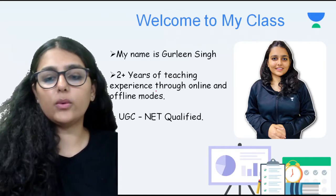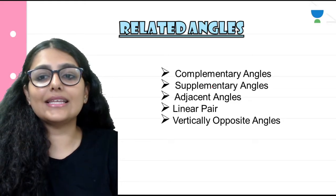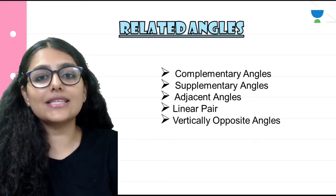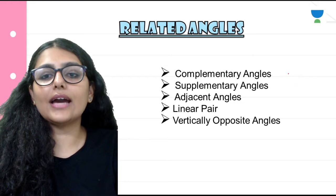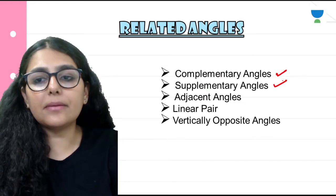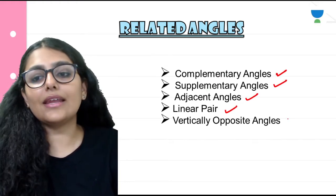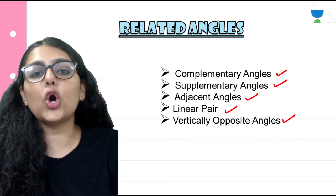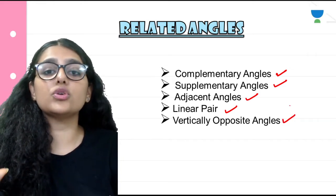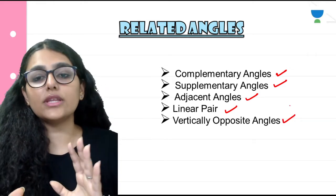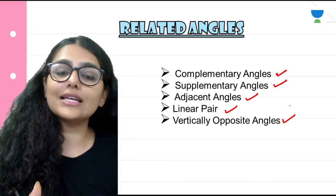Moving forward, let's begin. First of all, let's talk about related angles in lines and angles. Related angles are complementary angles, supplementary angles, adjacent angles, linear pair, and vertically opposite angles. Related angles means those which have a relation with each other — whose value is dependent upon the other angle.